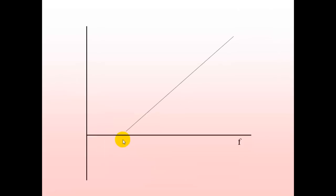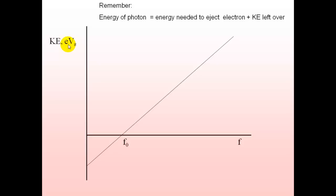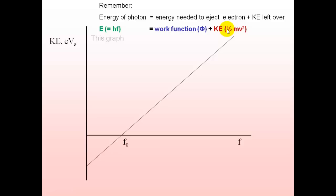Now looking at the kinetic energy graph: the stopping voltage Vs multiplied by the electron charge gives kinetic energy in joules. The energy of a photon has two parts — the energy needed to eject the electron (work function) and the remaining kinetic energy. So the equation is: hF = work function + kinetic energy of the most energetic electrons.